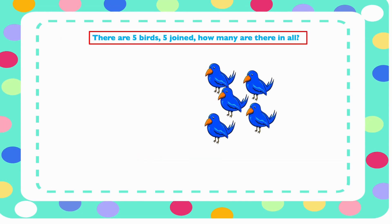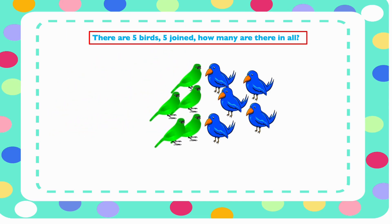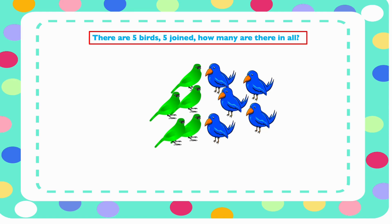There are five birds and another five join them. How many are there in all? To find the sum we need to count all the birds. Let's do that: one, two, three, four, five, six, seven, eight, nine, ten. There are ten birds all together, so the sum of five and five is ten.